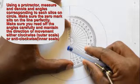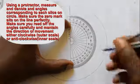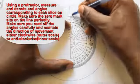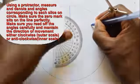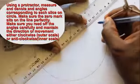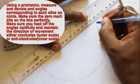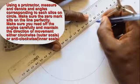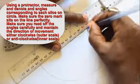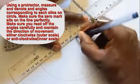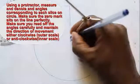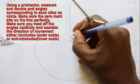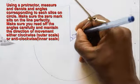Make sure the zero mark on the protractor sits on the line perfectly. Make sure you read off the angles carefully and maintain the direction of movement, either clockwise or anticlockwise.